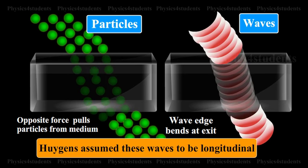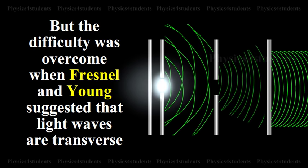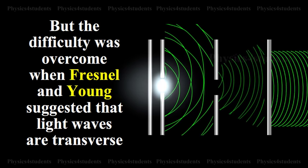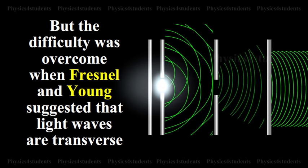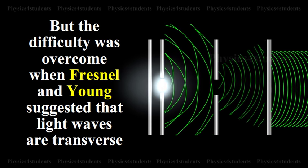Huygens assumed these waves to be longitudinal. Initially, rectilinear propagation of light could not be explained. But the difficulty was overcome when Fresnel and Young suggested that light waves are transverse.